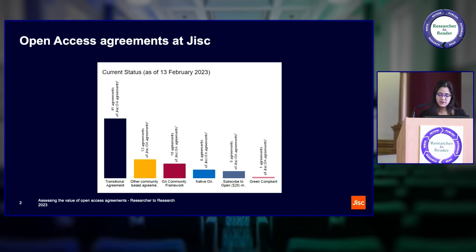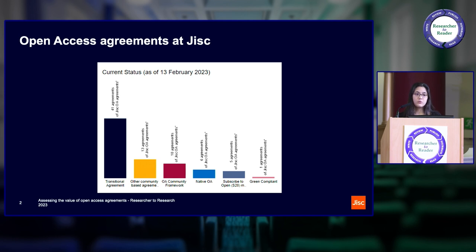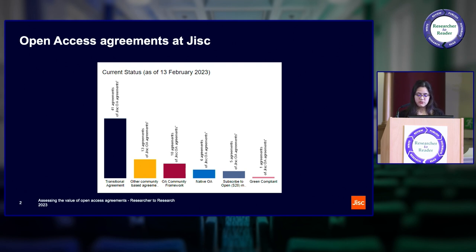First, some context. On screen I've got the agreements that JISC Collections negotiated for journal agreements where there's an OA publishing element — just the OA ones. We've got 41 transition agreements, 23 community-based ones, 6 native OA and 5 subscribed-to-open, plus a publisher supporting a green compliant route to fund requirements. I want to show the diversity of agreements we have. A lot of discussion and analytics work has been very focused on transitional agreements, but today I want to speak about open access agreements very broadly.